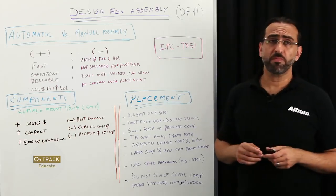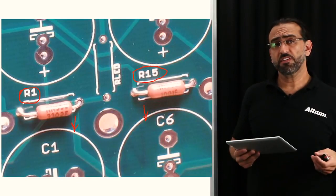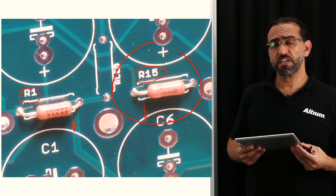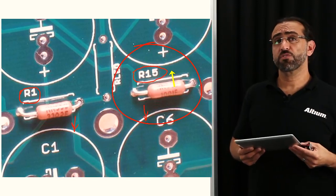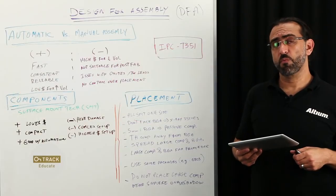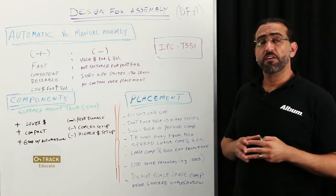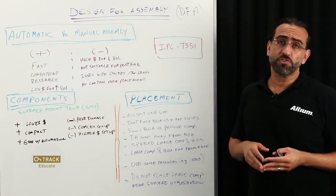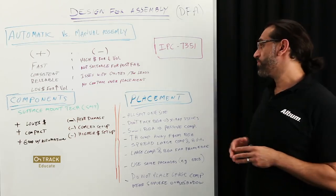Another disadvantage is limited control over component placement. As we can see in this image, you don't have control over where, for example, R15 falls — if it ended up on the top side, it could cover the reference designator. So you don't have as much control with the automated process. For further details on this point, you can refer to IPC 7351, titled General Requirements for the Design of Contact Pads and Printed Circuit Boards Using Surface Mount Technology.